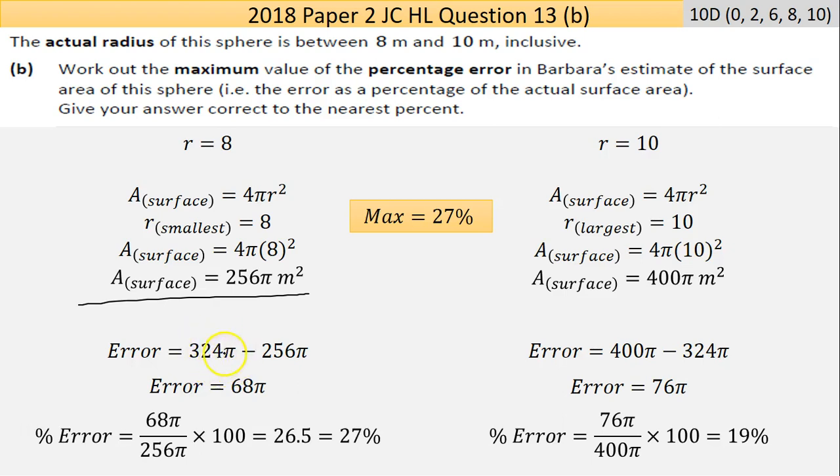So anyway, we have experimental value is 324π. That was the girl's estimate. The actual value if the radius was 8 is 256π. The difference is the error over the actual answer, which is 256π. I multiply by 100 to get percentage, I got 27%.